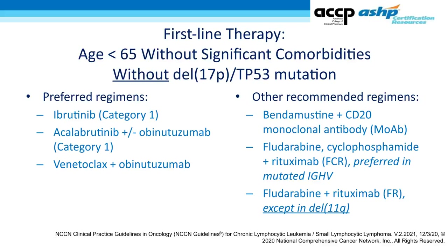For a go-go patient — less than 65 without significant comorbidities — without deletion 17p, the preferred Category 1 regimens are ibrutinib, acalabrutinib plus or minus obinutuzumab, and venetoclax plus obinutuzumab. FCR is recommended in patients with mutated IGHV, and fludarabine plus rituximab can be considered in patients without deletion 11q, but the strongest recommendations are the small molecules.